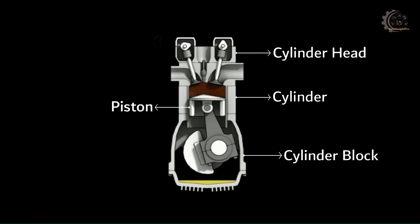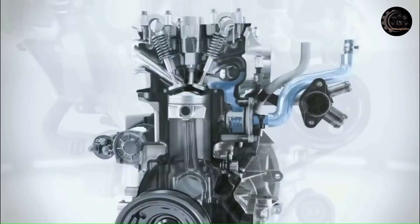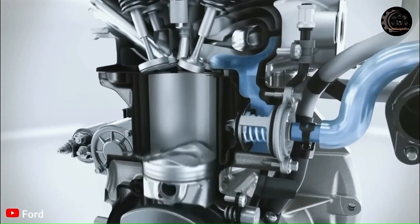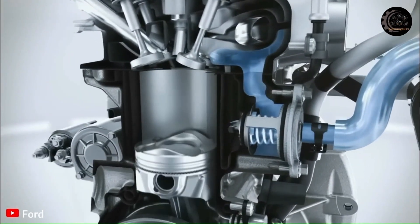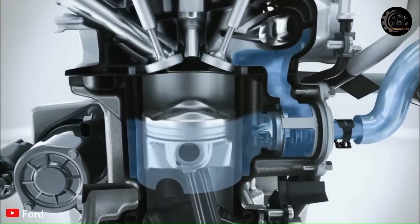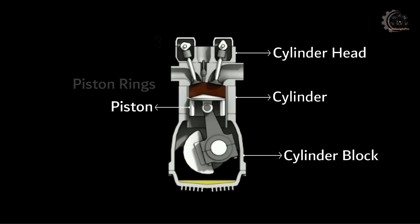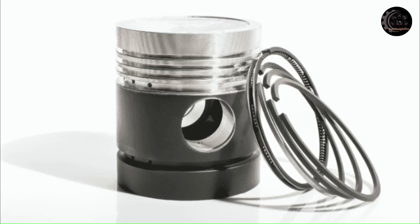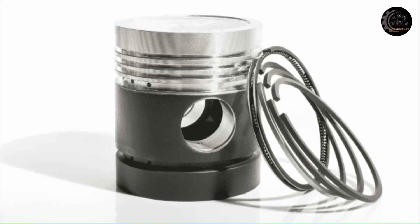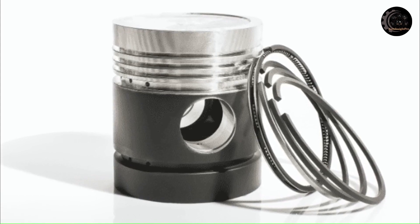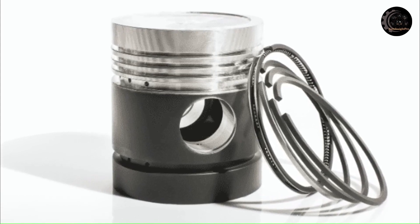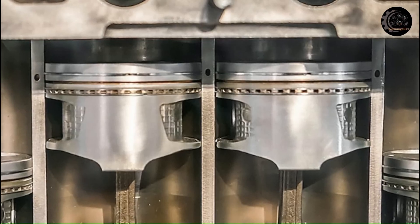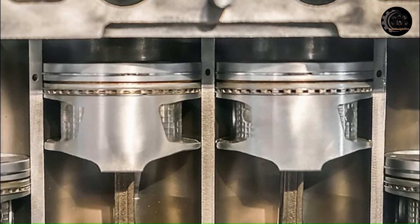Piston is a moving part of the combustion chamber. It is responsible for converting the energy released during the combustion process into mechanical work. Piston rings are metallic split rings attached to the outer diameter of a piston in an IC engine, used for sealing the combustion chamber so that there is minimal loss of gases to the crankcase.